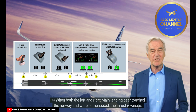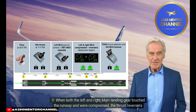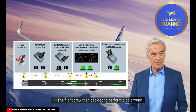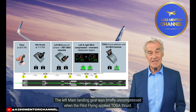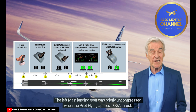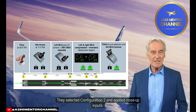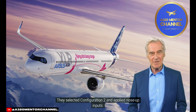Step 5: The flight crew then decided to perform a go-around. The left main landing gear was briefly uncompressed when the pilot flying applied TOGA thrust. They selected configuration 2 and applied nose-up inputs.